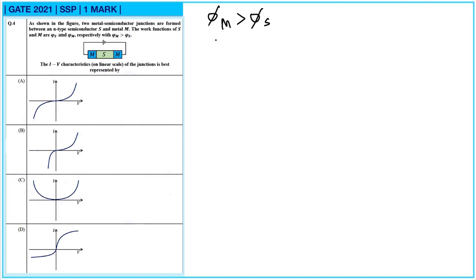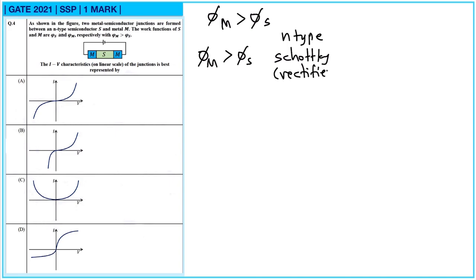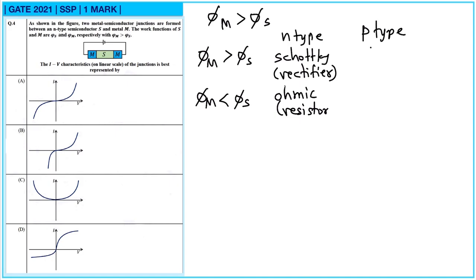For an N-type semiconductor where φM is greater than φS, it will form a Schottky junction, which behaves as a rectifier. If φM is less than φS for N-type, it will be an ohmic junction, which behaves as a resistor.